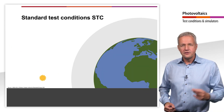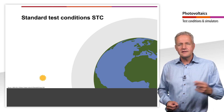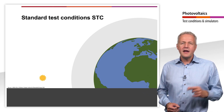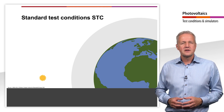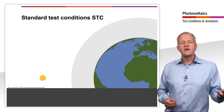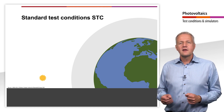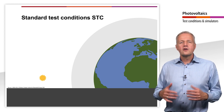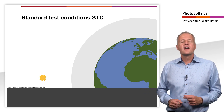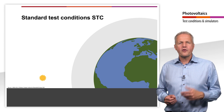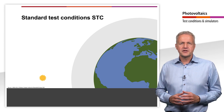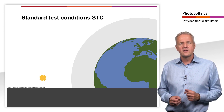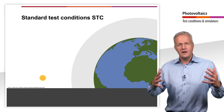We have seen in the last learning unit that the JV characteristic, and thus the parameters with which we describe the electrical behaviour of a solar cell, depend on the irradiance and the temperature. In order to compare different solar cells or modules, their parameters must be measured under the same conditions. Therefore, globally uniform standard conditions have been defined, the so-called standard test conditions, briefly referred to as STC.